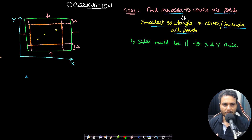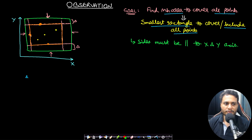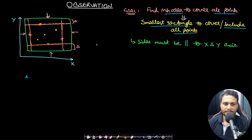We can find this bounding box by finding the topmost point, the bottommost point, the leftmost point, and the rightmost point. If we know only these four extreme points, we can construct the smallest rectangle to cover all the points. This is the entire idea.